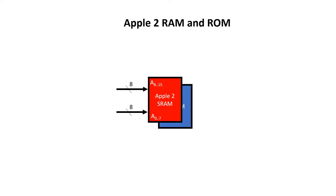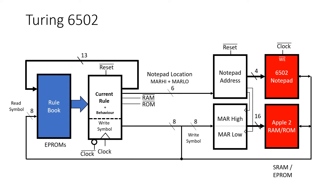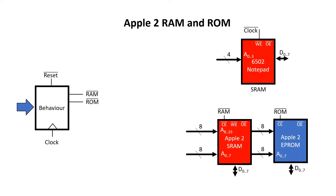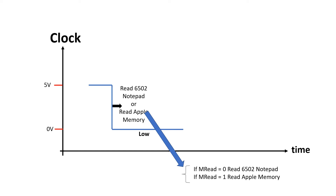Now I want to look at the signals that go into the memories in a bit more detail. What I've called the system memory or Apple II memory actually consists of both a ROM and a RAM. The address and data lines are wired up in parallel, but they have different control signals. The easiest way to implement this was to add these control signals to the behavior, so they're represented on the behavior output flip-flops, which are just part of the current rule flip-flops. This means selecting between ROM and RAM is controlled by the rulebook. I need to go back to the timing diagram and introduce a new signal called MREAD, which is generated by the rulebook and controls whether the notepad or the system memory is read.